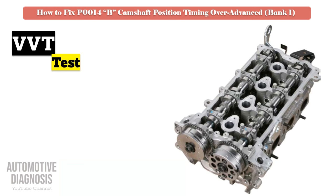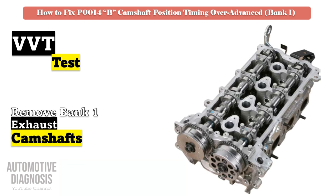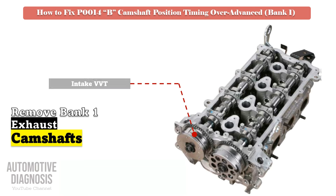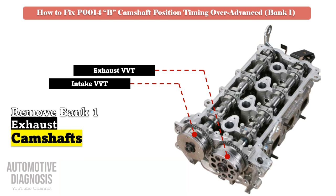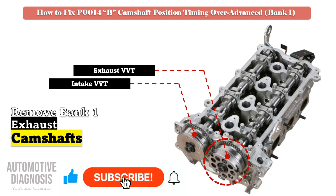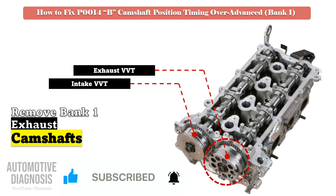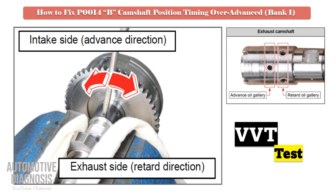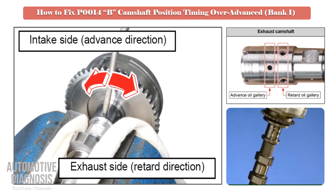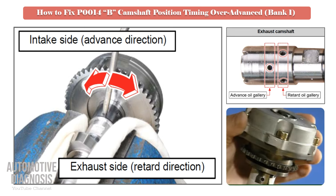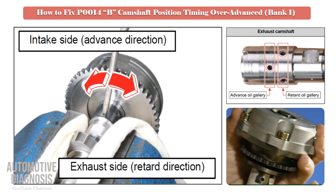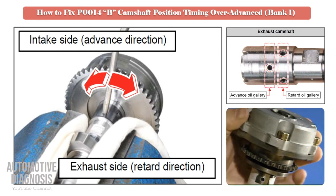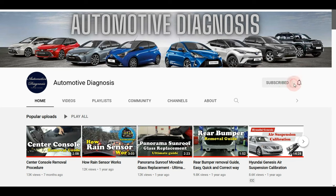For testing the exhaust VVT, remove the exhaust camshaft and locate the advance and retard oil passages on the camshaft. Test the exhaust VVT by providing compressed air into the relevant oil galleries. When you provide air into the retard oil gallery, the VVT should rotate, as the exhaust VVT is locked at maximum advance. Before providing compressed air into the retard oil gallery, make sure the VVT is locked and does not rotate. If the VVT fails this test, it must be replaced.